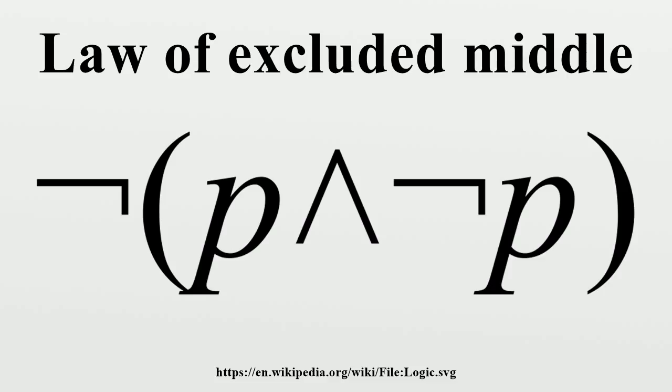No third is given. The earliest known formulation is Aristotle's principle of non-contradiction, first proposed in On Interpretation, where he says that of two contradictory propositions one must be true, and the other false. He also states it as a principle in the Metaphysics Book III, saying that it is necessary in every case to affirm or deny, and that it is impossible that there should be anything between the two parts of a contradiction. The principle was stated as a theorem of propositional logic by Russell and Whitehead in Principia Mathematica. The principle should not be confused with the semantical principle of bivalence, which states that every proposition is either true or false.